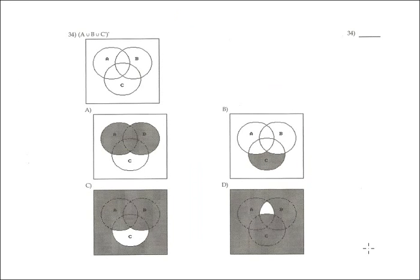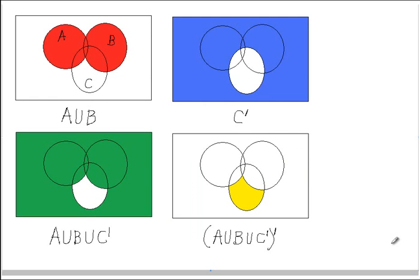Problem 34: (A∪B∪C')'. Step by step: A∪B is A and B together. Union C complement is completely outside C. So A∪B∪C' is the red part plus the blue part combined. The union of those gives the green region. The complement is everything outside this region — the yellow part.